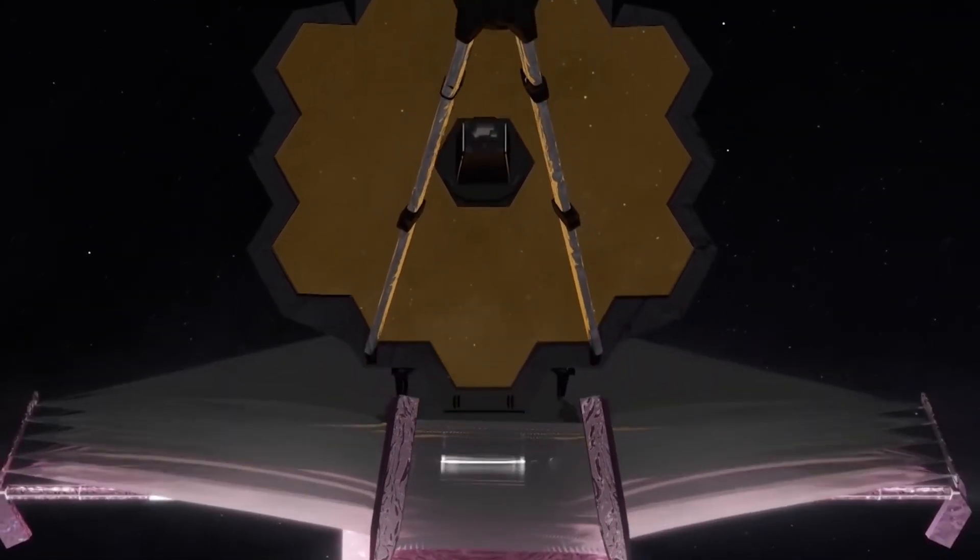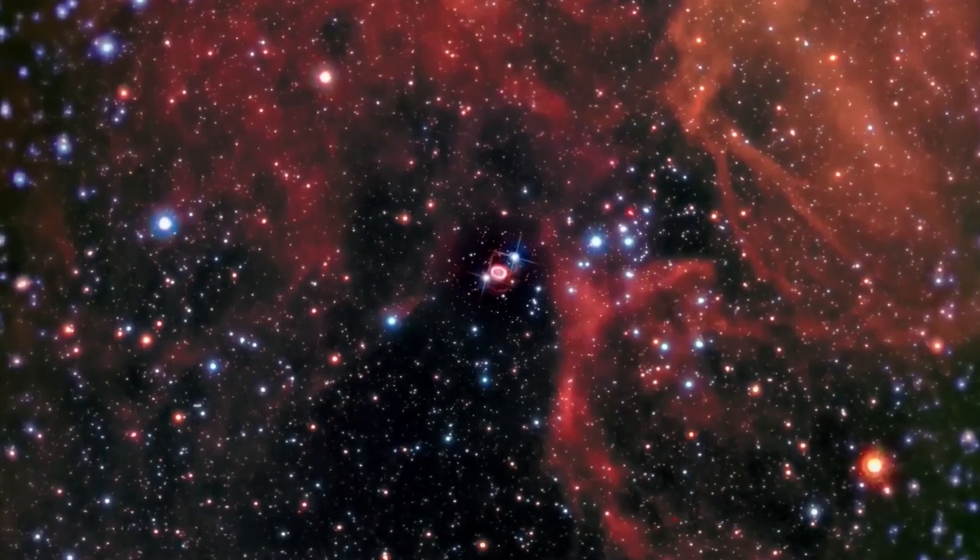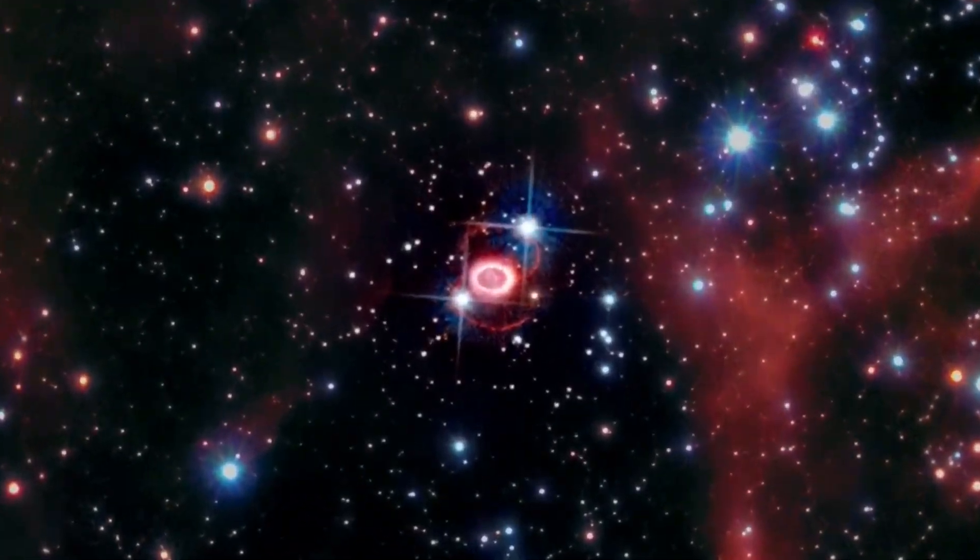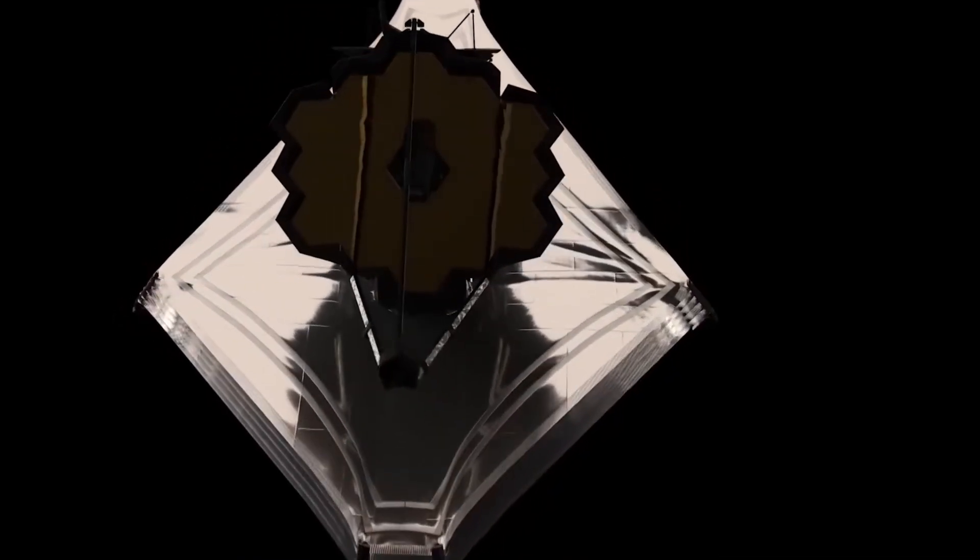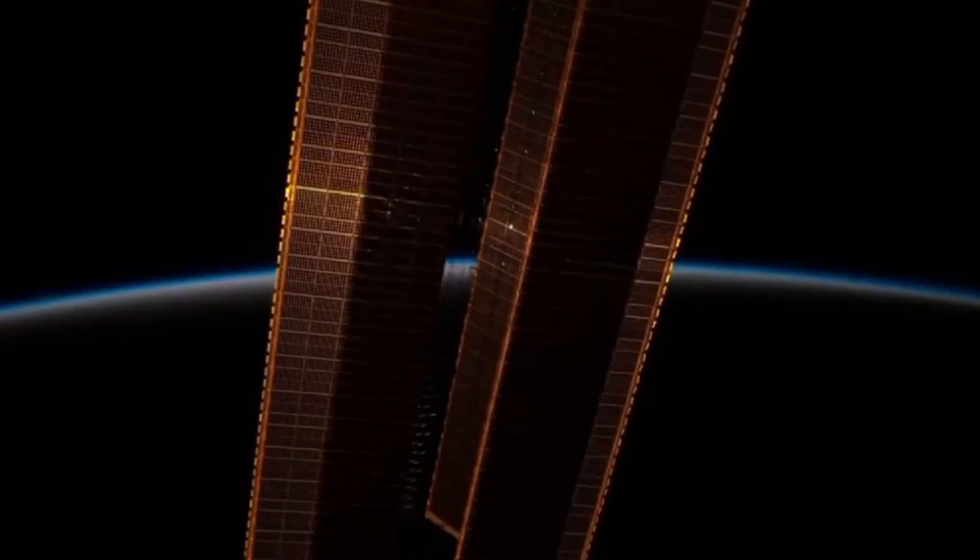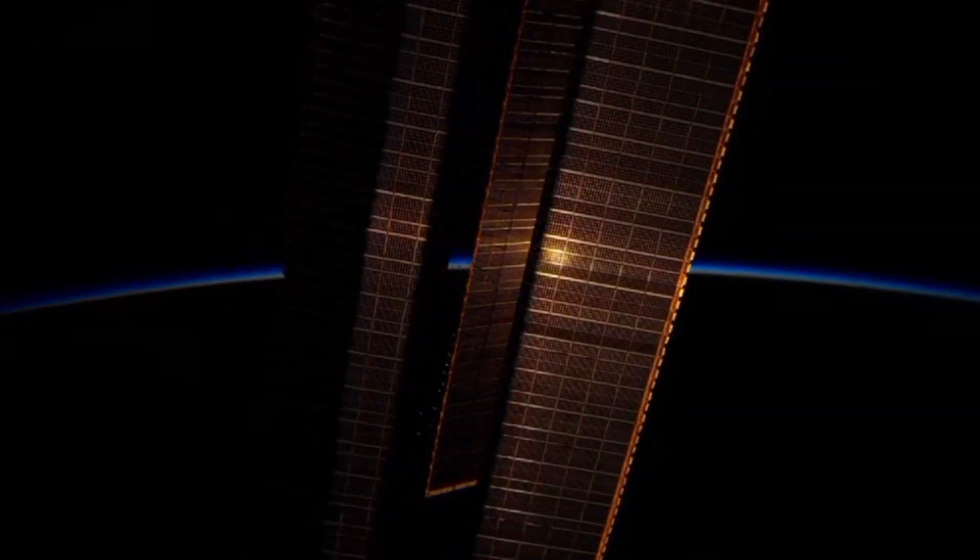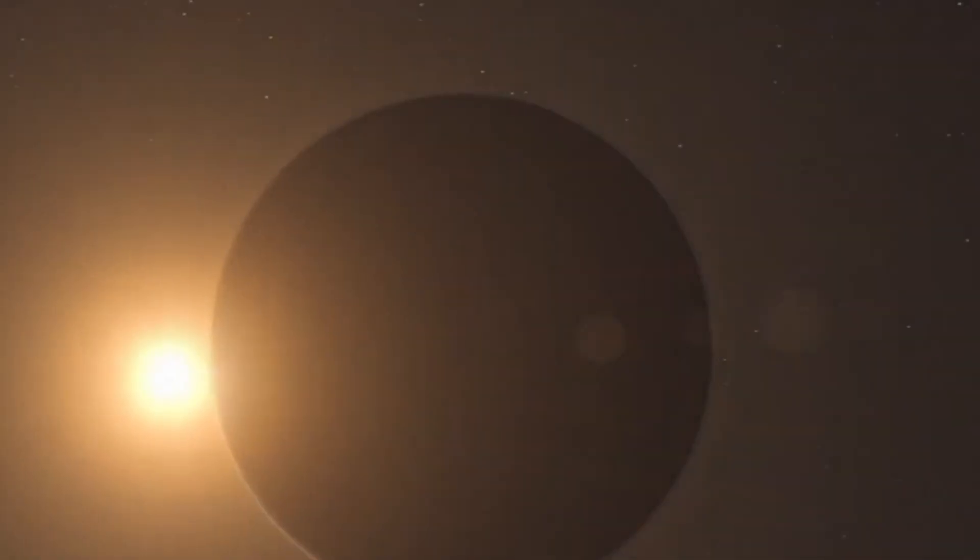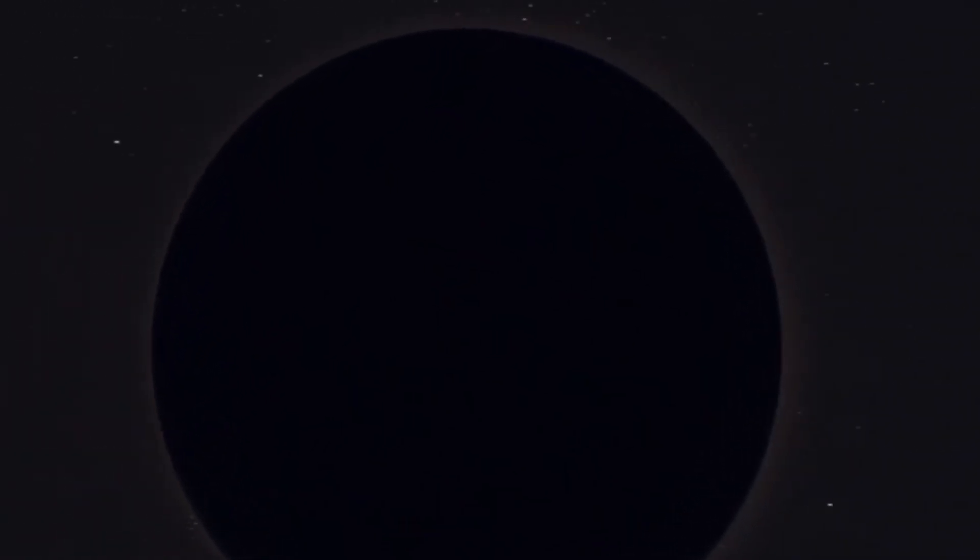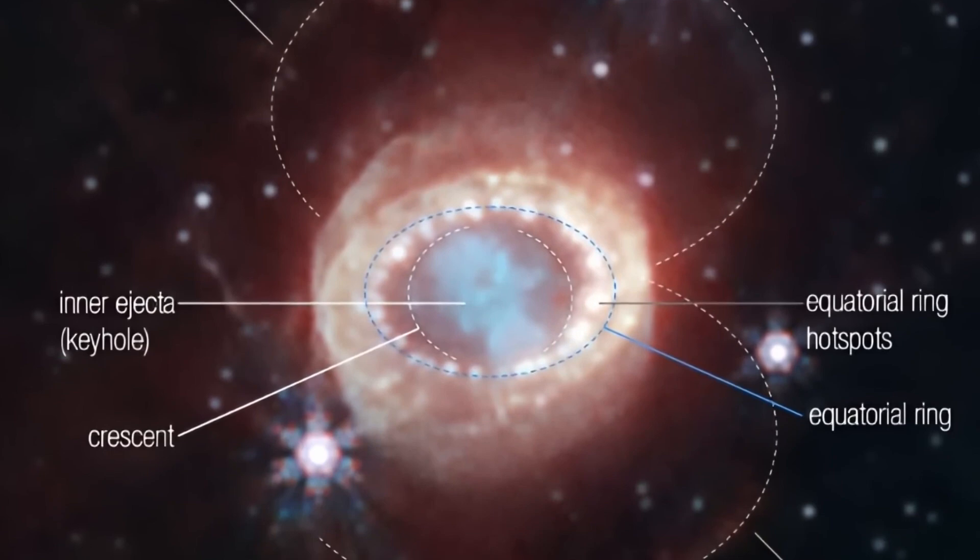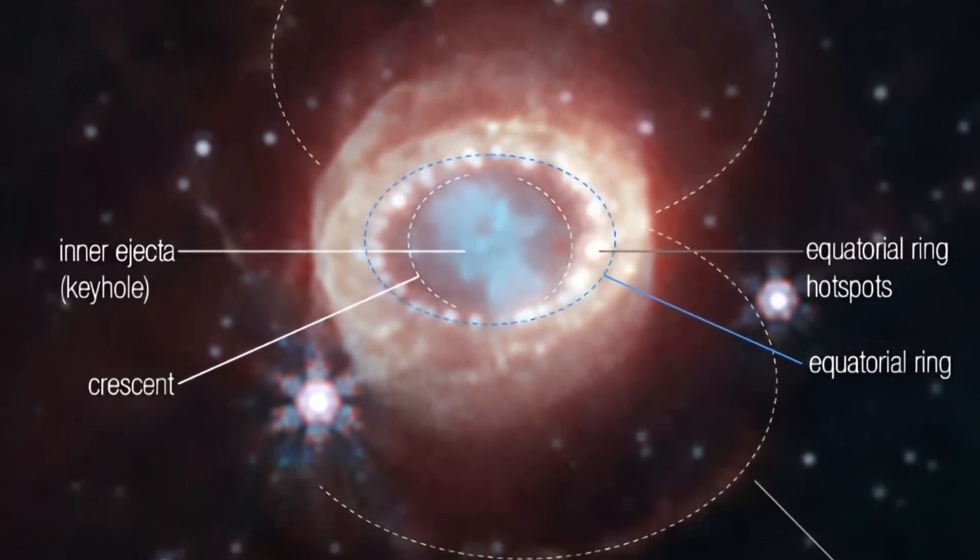Betelgeuse is not just any star, it's a behemoth. Its diameter is about 900 times that of our sun, and if placed at the center of our solar system, its outer surface would extend beyond the orbit of Jupiter. Such massive stars have short lifespans, and their deaths are explosive, often resulting in supernovae. These explosive events are not only mesmerizing but also crucial for the universe.